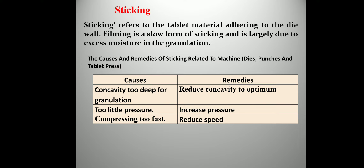The next defect is sticking. Sticking refers to tablet material adhering to the die wall. Filming is a slow form of sticking and is largely due to excessive moisture in the granules. In peaking, material adheres to the punches; in sticking, material adheres to the die wall. Initially, a very thin layer of granulating material forms on the die, which is called filming.